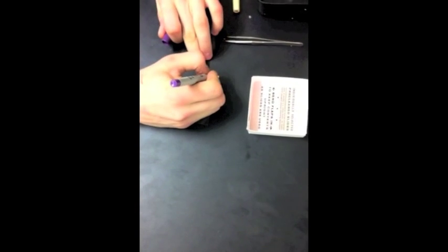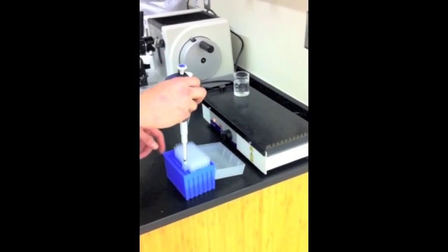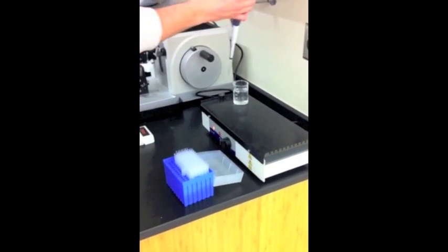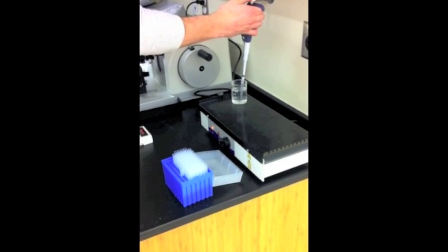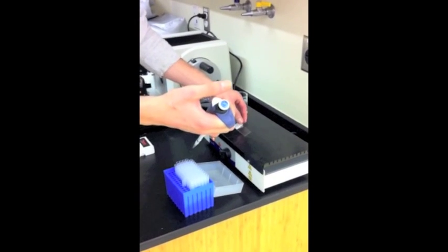Label a slide with your organ, your initials, and the date. Be sure to use pencil on the frosted portion of the slide. Put a few drops of warm water on the slide using a transfer pipette and place it on the slide warmer.